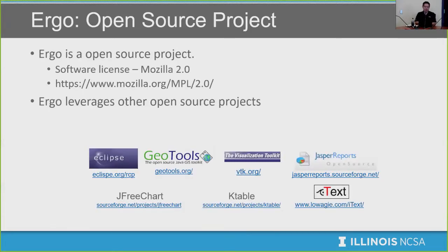Ergo is open source — we're currently using the Mozilla 2.0 Public License. It's close to the Eclipse license and is very business-friendly, while also having some GPL aspects. We leverage a lot of other open source projects. Especially, we use Eclipse as a core fundamental component — the foundation of this software that allows us to make an extensible system.